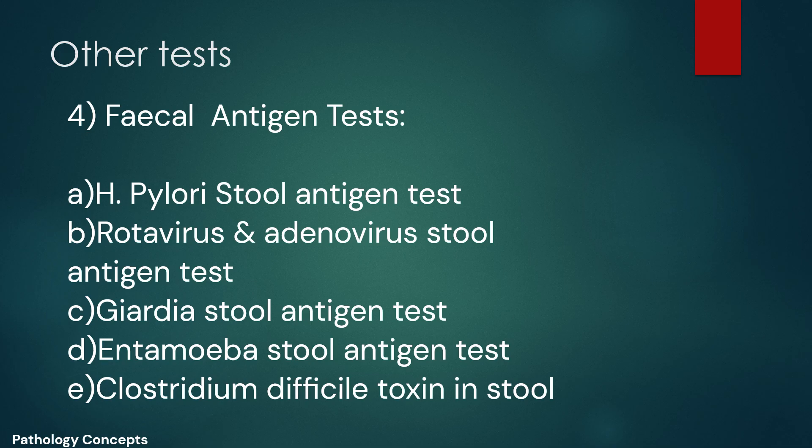Fecal antigen tests include the H. pylori stool antigen test. Detection of H. pylori antigen in stool indicates an ongoing infection; therefore, a stool antigen test is useful for diagnosis and for confirming eradication. Other fecal antigen tests include rotavirus and adenovirus stool antigen test, Giardia stool antigen test, Entamoeba stool antigen test, and Clostridium difficile toxin test.